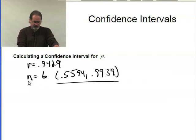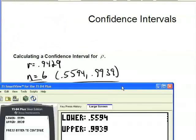Now suppose that we had a larger sample size. Suppose n equals 20, we had a sample size of 20, and we end up with the same sample correlation. Let's run the program again.